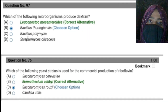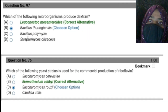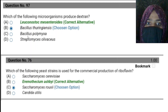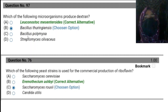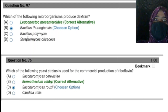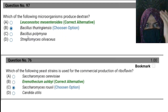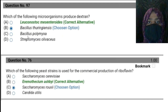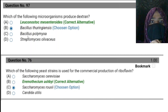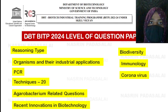Organisms and their industrial applications are another topic. You can refer to Satyanarayana's Biotechnology book for this. For example, which organism is used to produce a particular enzyme, or which organism is used to produce riboflavin. They ask direct questions here — such as which bacteria is present in curd, which bacteria is present in cheese. Focus on this while studying industrial biotechnology.